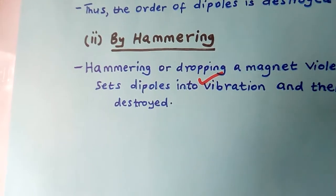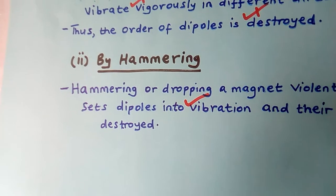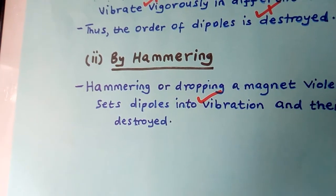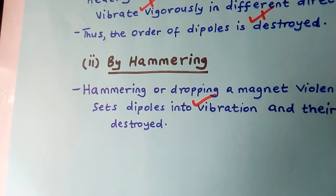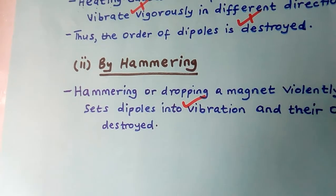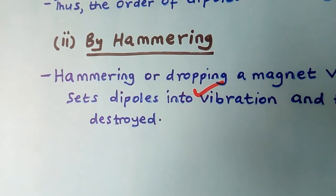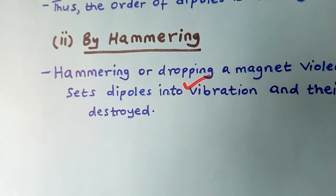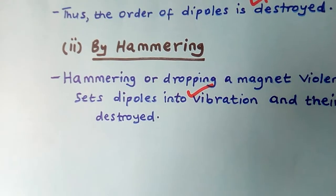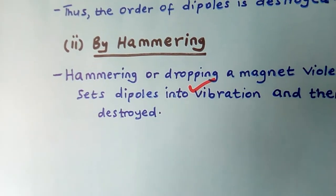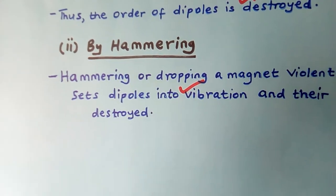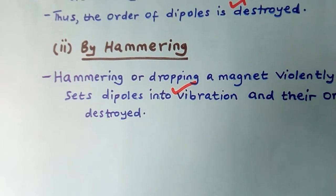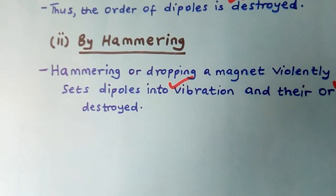The second way is by hammering. If you keep on hammering a magnet or dropping it violently, hammering will also make the dipoles vibrate — the same story. They vibrate in such a way that they are vibrating in different directions, and it will disorganize the arrangement of the dipoles. So hammering or dropping a magnet sets the dipoles into vibration and their order is destroyed. So hammering and heating have the same explanation: they make the dipoles vibrate in different directions, and finally the order of the dipoles is disorganized and the magnet is demagnetized.